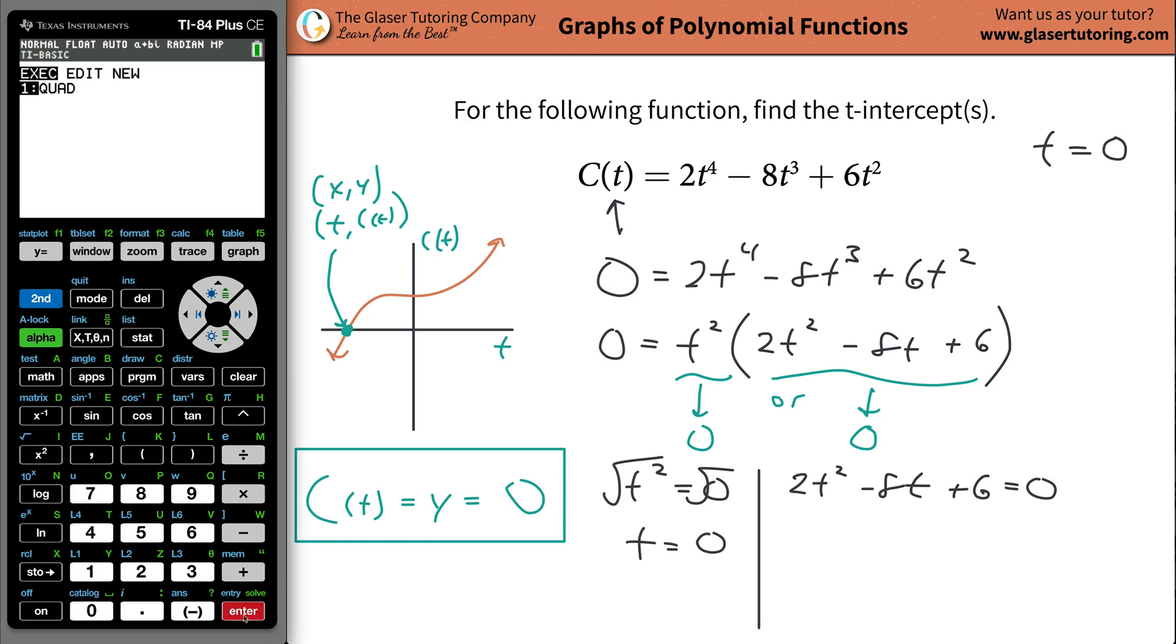So watch, I'm going to do it real quick. So I'm going to go to program. I'm going to execute my quad. And then I'm going to plug in my A value. Remember, the A value is always going to be the first, the B value is the second, and then your C is the constant. So my A is 2. Hit enter. The B is going to be negative 8. And then the C is 6. And watch how nice. Oh my goodness. Look, there they are. Three and one. So I actually know my other T values already.